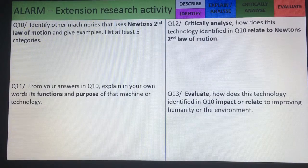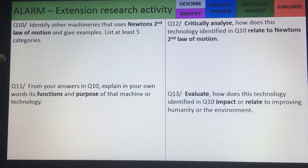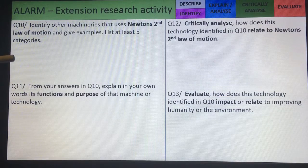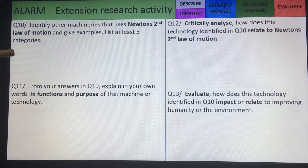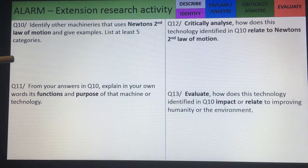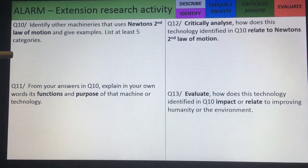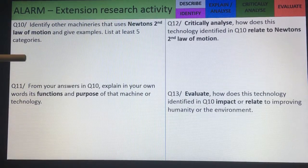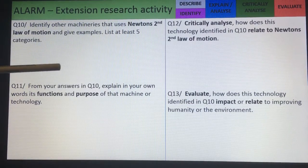This is an extension alarm activity where it's optional for students who want to further complete more research study. Where question 10 is asking identify other machinists that use the Newton's second law of motion and give examples. List at least five categories.